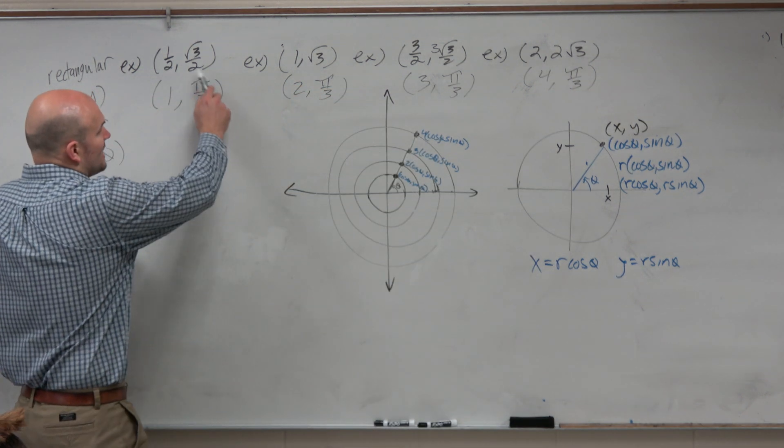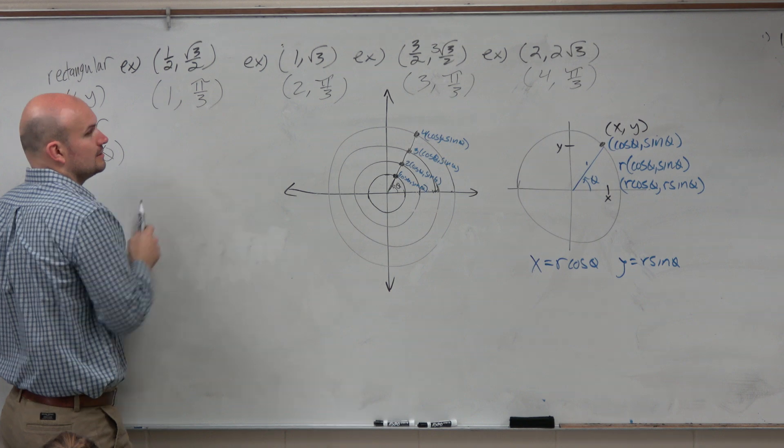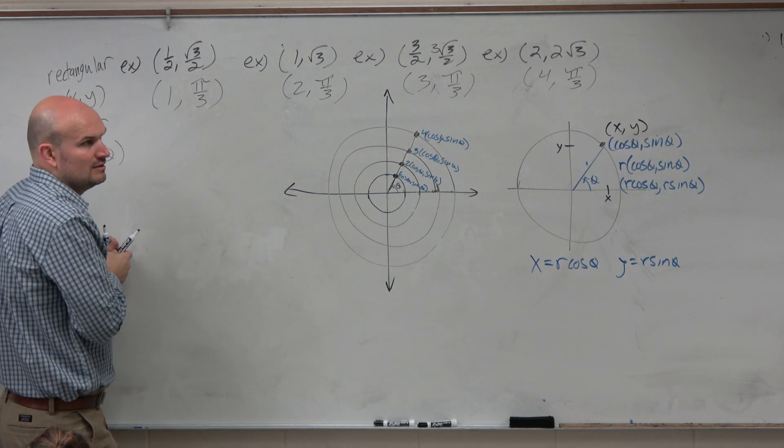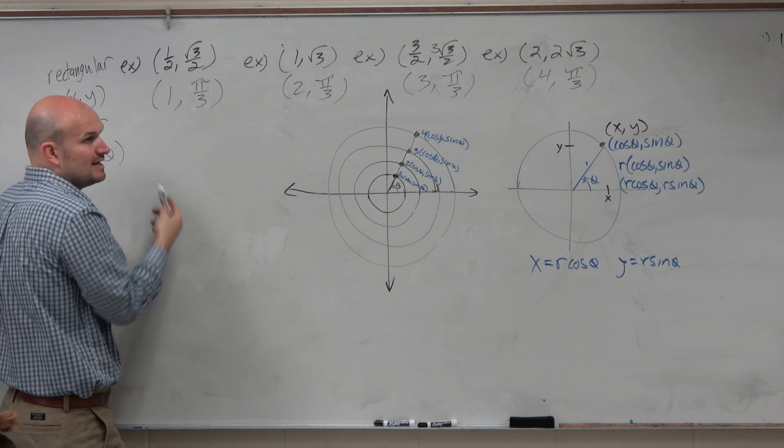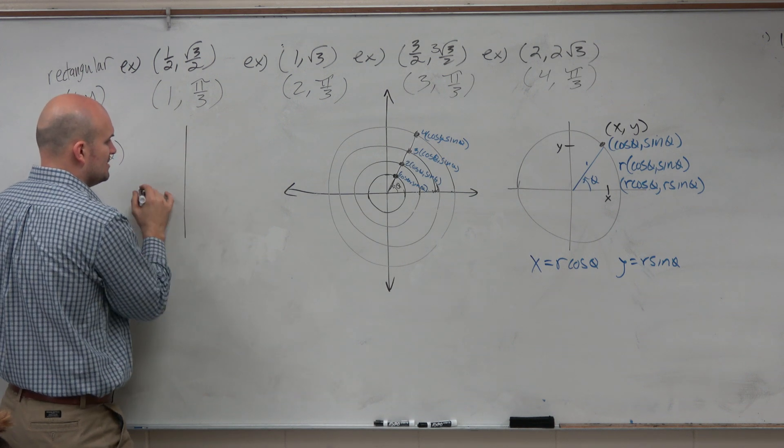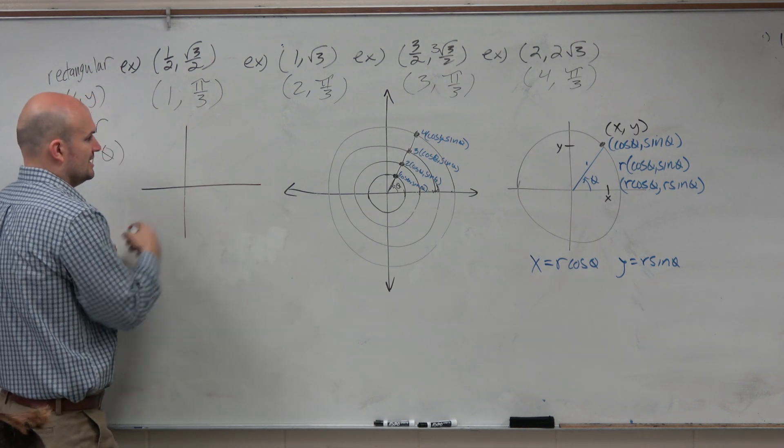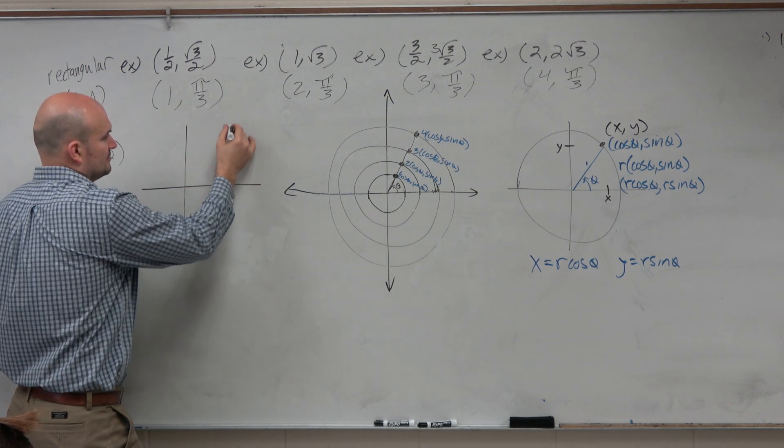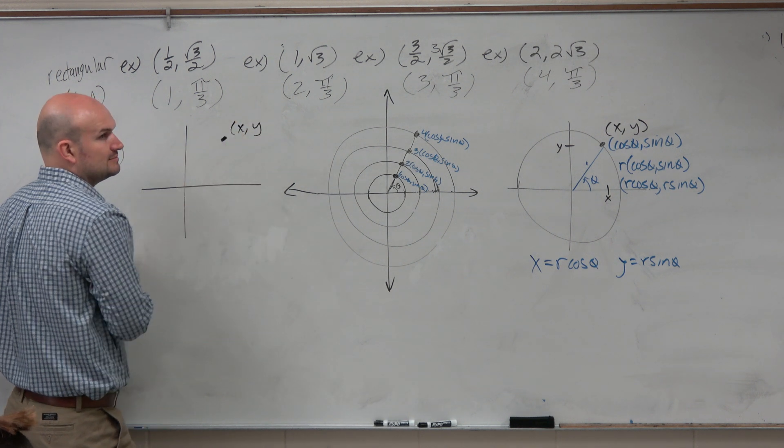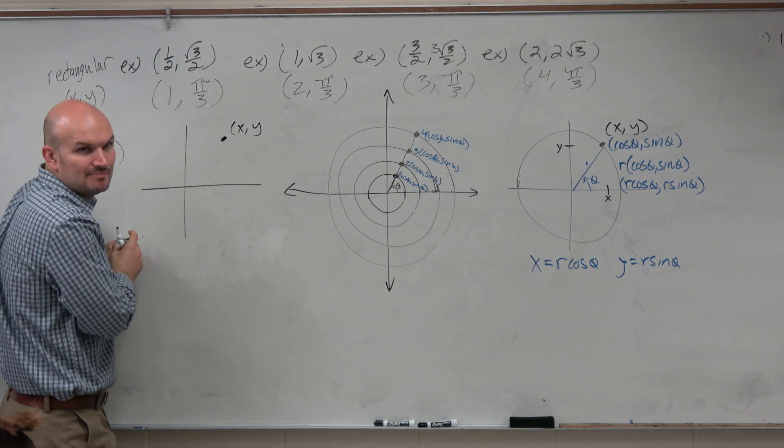What about going the other direction? How do we go from here to here? What if we don't know the angle? This one was easy because we knew the angle. What if I give you some random point (x, y)?